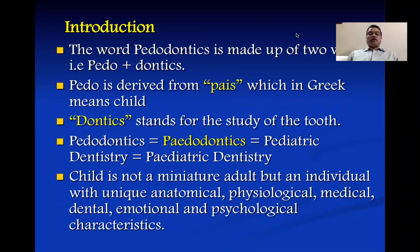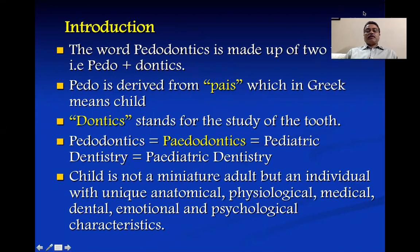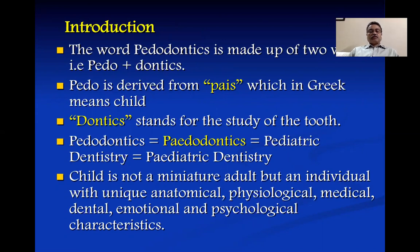The word pedodontics is made of two words: pedo and dontics. Pedo is derived from the Greek word pious, which means child, and dontic stands for study of the tooth. So in effect, pedodontics is derived from pedo plus dontics, wherein pious is a Greek word from which pedo is derived, and dontic stands for study of the tooth.